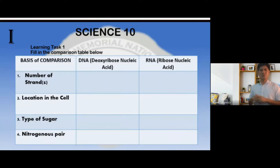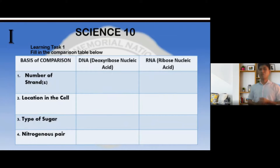The table shows the basis of comparison between DNA and RNA in terms of number of strands, location in the cell, type of sugar, and the nitrogenous base.